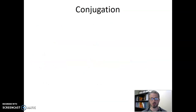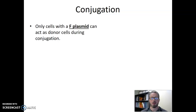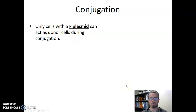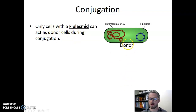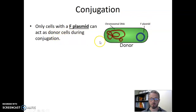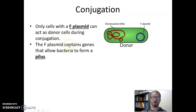Now let's think about conjugation. Conjugation is one mechanism by which horizontal gene transfer can occur. The first thing to know is that only some cells can do conjugation — only cells that have an F plasmid. Only F plasmid-containing cells can act as a donor during conjugation. Here's an example of a donor cell: it has its chromosomal DNA, and in addition to that it has an F plasmid. This is the kind of donor cell that can participate in conjugation.